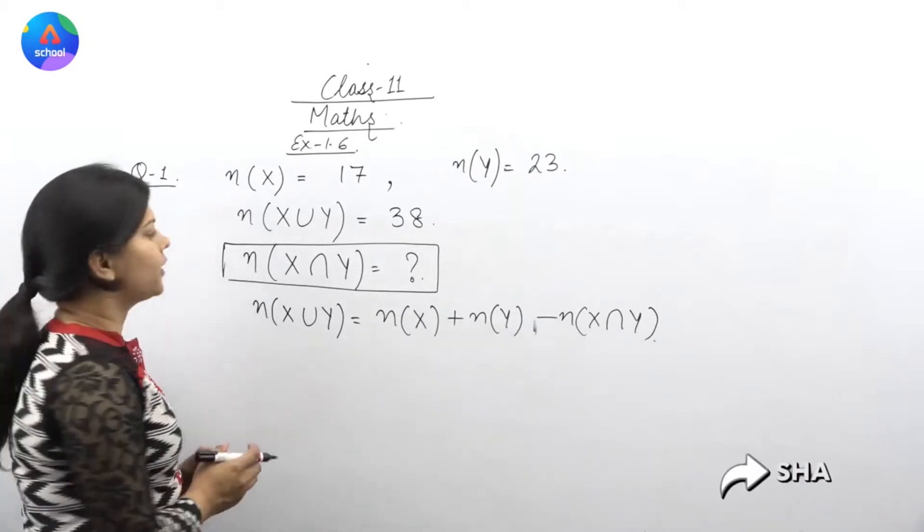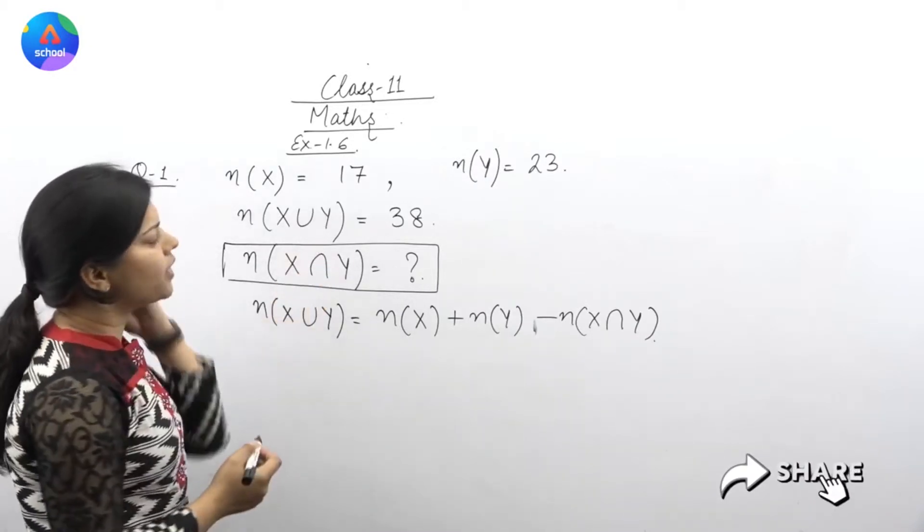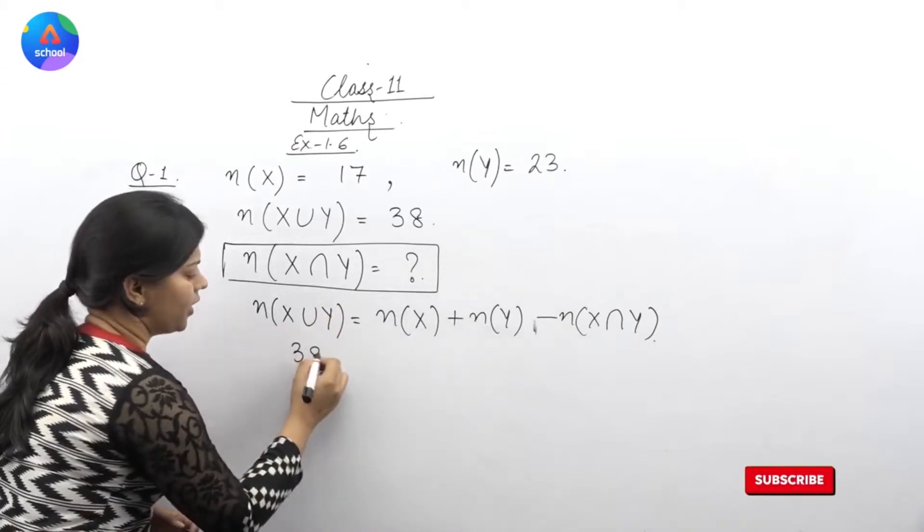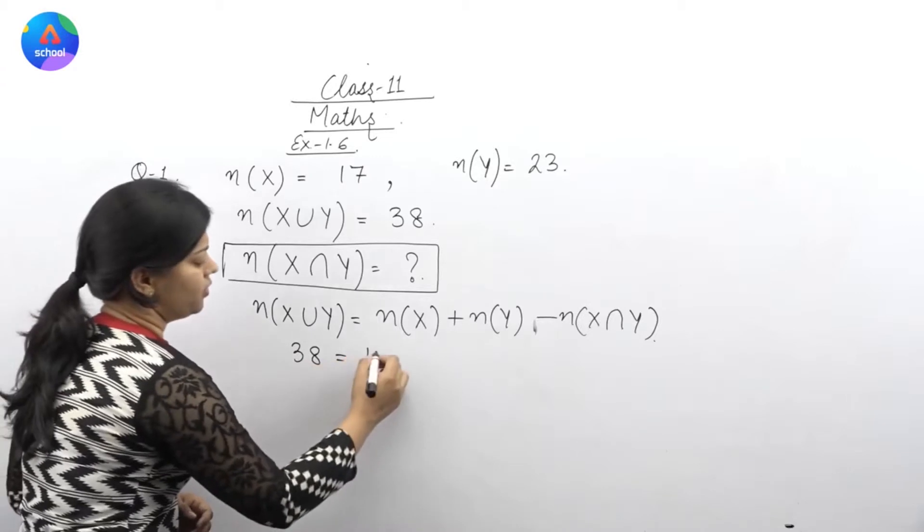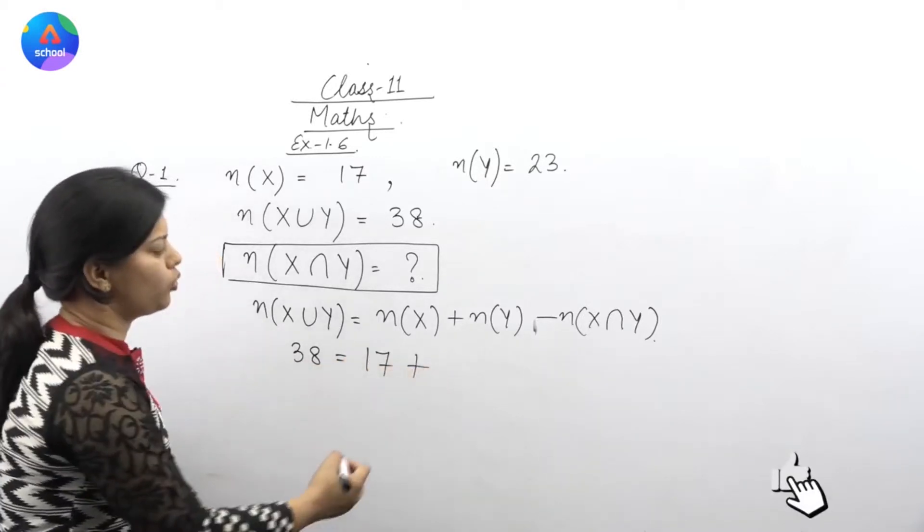First, number of elements in X union Y is 38. Right? After that number of elements in X is 17. Plus, 23.